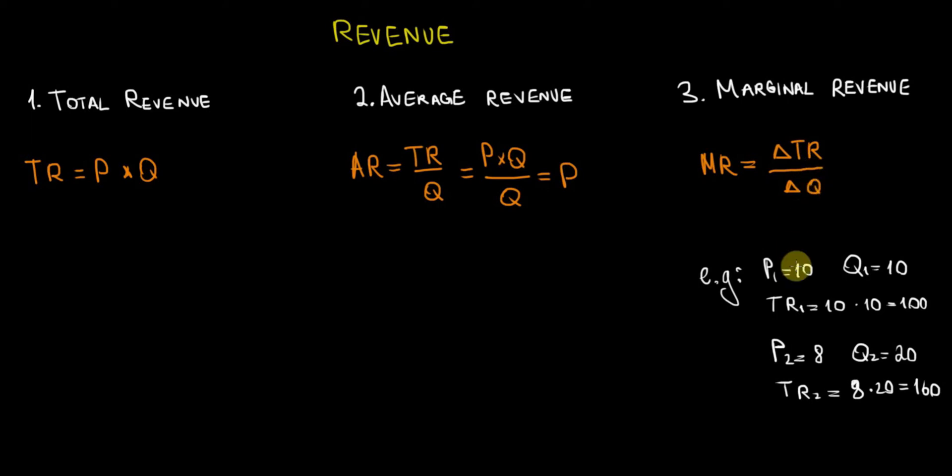Suppose the following: a company sells a product for an initial price of $10 per unit and sells 10 units at that price level, so the total revenue initially is 10 times 10, which is $100. Now suppose the company decides to lower the price to increase revenue. The company thinks consumers will buy many more units, so it lowers the price to $8. Now the company sells 20 units, so the total revenue becomes 8 times 20, which is $160.